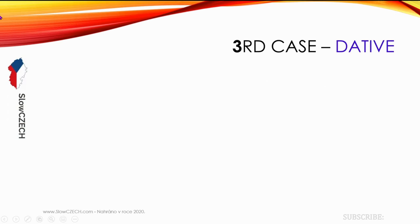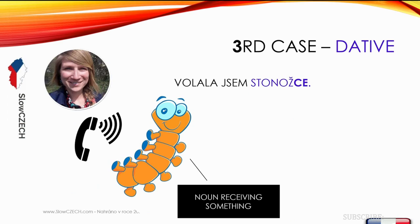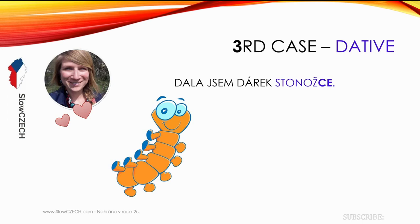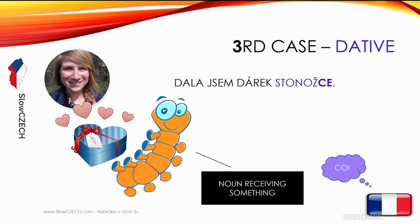The third case is the Dative. It means the noun is receiving something — receiving some action, for example a phone call. 'Volala jsem stonožce' — I called the centipede. And I can say 'Stonožce jsem volala' — it will still be me calling the centipede, thanks to the ending. In French this is called the indirect object. In Czech we don't need any preposition at all. Another example: 'Dala jsem dárek stonožce' or 'Stonožce jsem dala dárek' — and still, I gave a gift to a centipede.